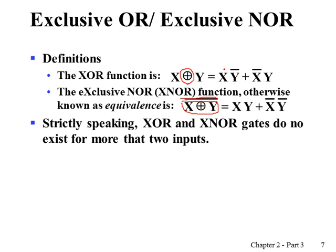Strictly speaking, exclusive OR or exclusive NOR do not exist for more than two inputs. If we cascade the properties, we have something called the odd function or even function. But strictly, exclusive OR and exclusive NOR deal with only two variables.